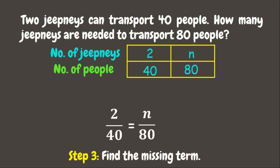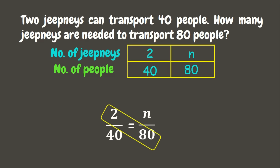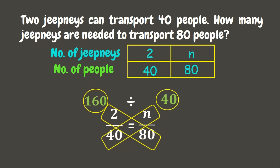For our third step, let's find the missing term, which is n. To find the missing term we are going to use the cross multiplication method. 80 times 2 is 160; 40 times n is 40n, but we are only going to write 40. The next step is to divide: 160 divided by 40 is 4.